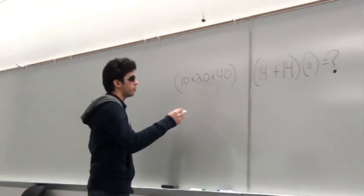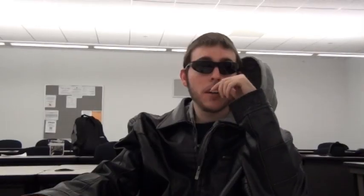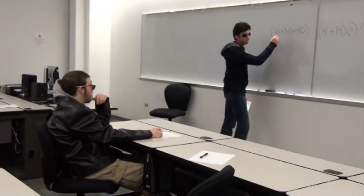Alright, how much is 10 times 20 times 40? The answer is 8,000.